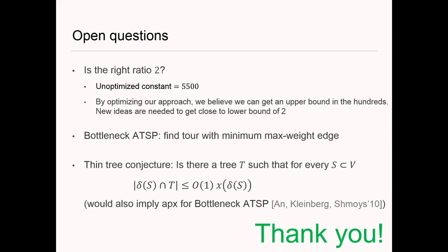Some open questions. I've been avoiding the topic of constants — the constant in our result is around 5,000. Some people believe the right ratio should be 2. We can optimize our approach to make it less modular and open up black boxes, possibly getting an upper bound in the hundreds, but really new ideas are needed to get anywhere close to the integrality gap lower bound.